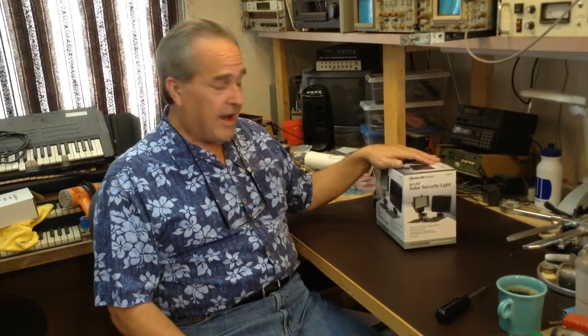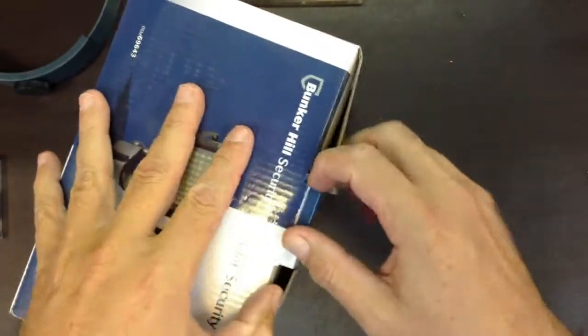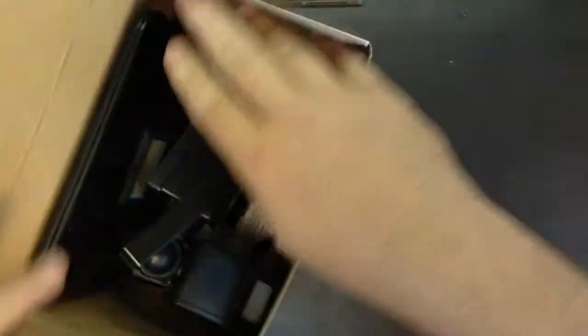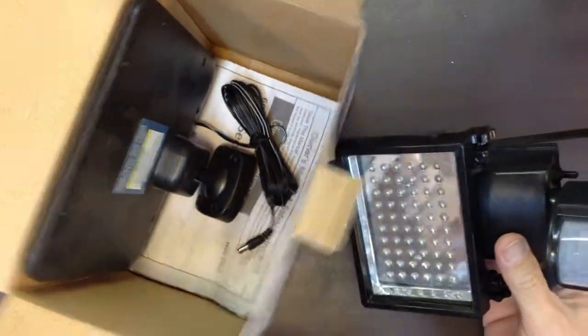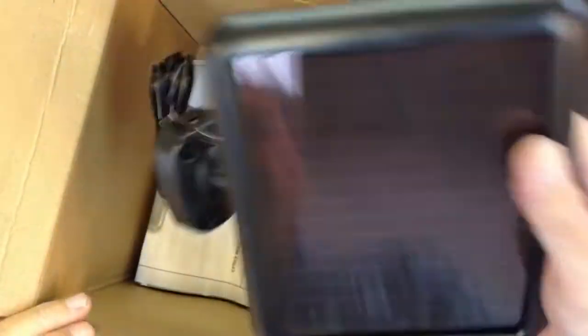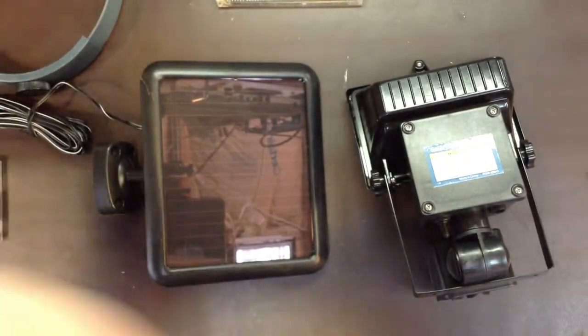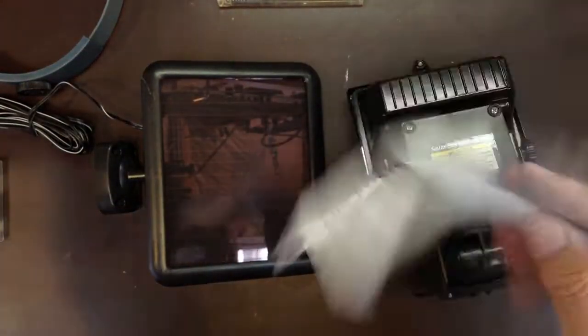So let's tear it apart and see what we can get out of it. So inside the box, there's the motion sensor, the light panel and a box. There's the solar panel and instructions.